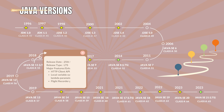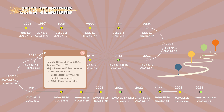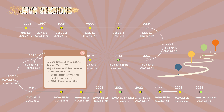Java 11.0 with the class file version 55. It was released on 25th September 2019. Release type is long-term support version. The major features and enhancements are a focus on stability and security, removal of several deprecated features, the HTTP client standardized, local variable syntax for lambda parameters, and the Flight Recorder profiler.